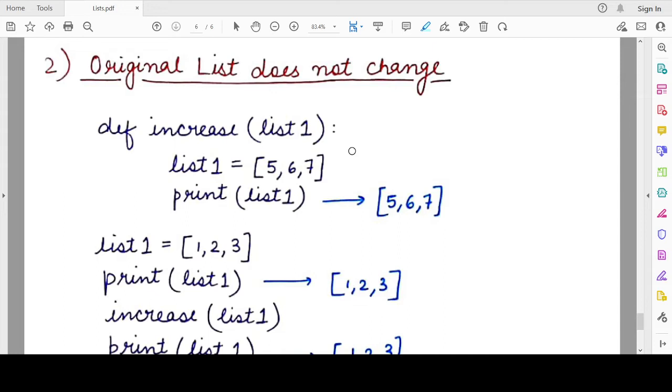I hope you remember the concept of local scope and global scope. Whenever you create a variable or define anything within a function, that variable has a scope only within the function. As soon as the function ends, that particular variable will not be accessible outside.